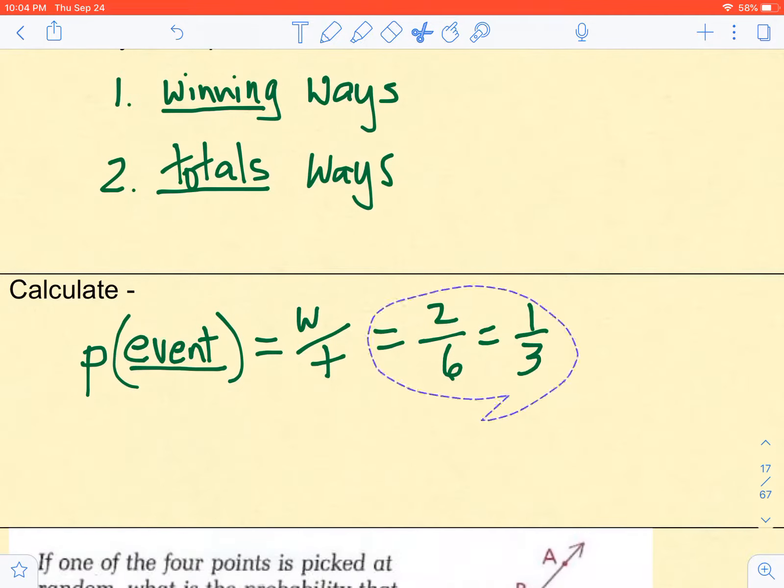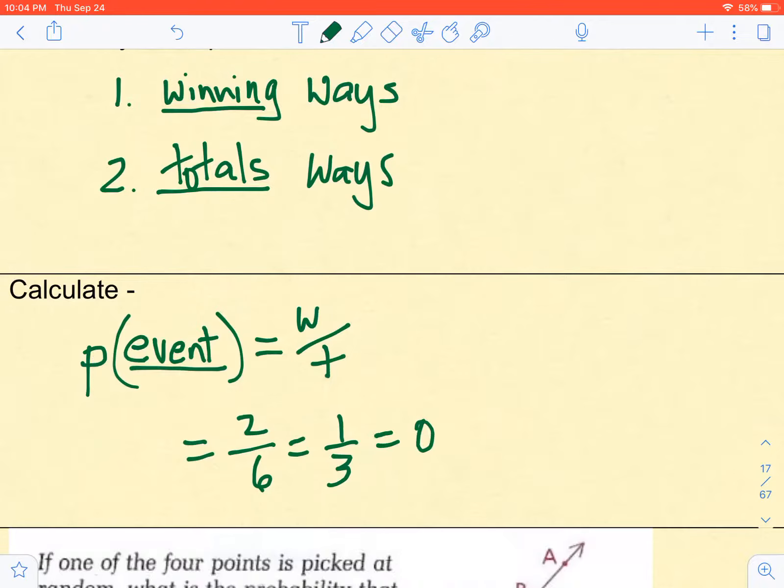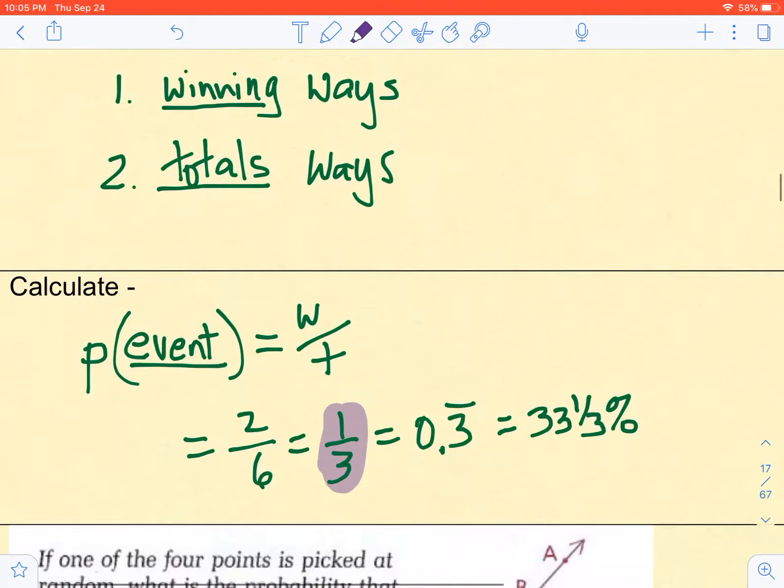Let me put this over here so we see it's just an example. Now we can report this as a decimal, and 0.3 repeating is accurate, but it's not too useful because it goes on forever. Another way we could report this is 33 and a third percent. But of these three, very frequently the ratio is the best way to report it.